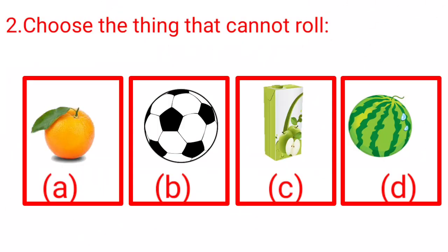Here is the second question. Choose the thing that cannot roll. You have heard about the things that can roll. Rolling objects. Here we have four objects at four options. Option A is an orange. Option B is football. Option C is a juice pack and option D is a watermelon.